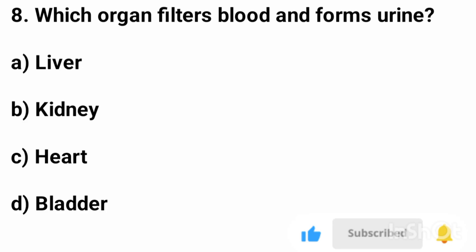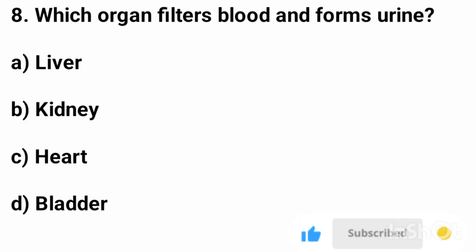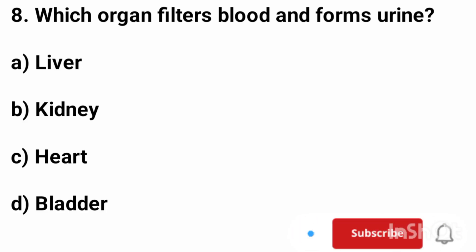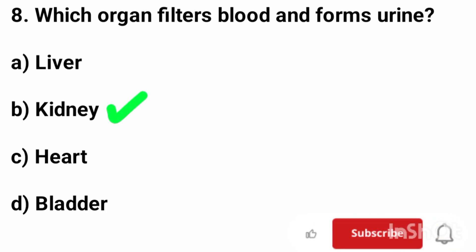Question number 8. Which organ filters blood and forms urine? The correct answer is option B, kidney.